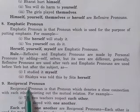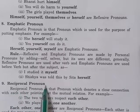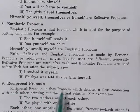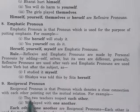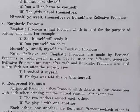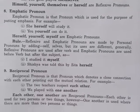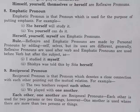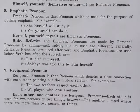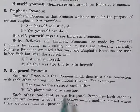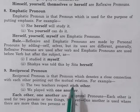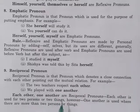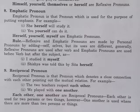The ninth one is reciprocal pronoun. Reciprocal pronoun is that pronoun which denotes a close connection, pointing out the mutual relation. For example: the two teachers respect each other, we played with one another. Each other and one another are reciprocal pronouns. Each other is used for two persons or two things, and one another is used where there are more than two persons or things.